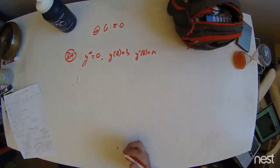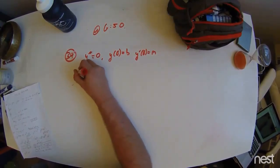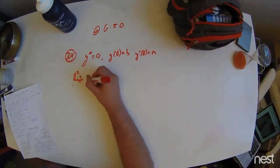Alright, so, granted this expression, we have d squared y dt squared equals zero.